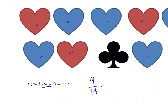So if all I wanted to know was what's the probability of drawing a heart, it would be this nine divided by fourteen or roughly about sixty-four percent.